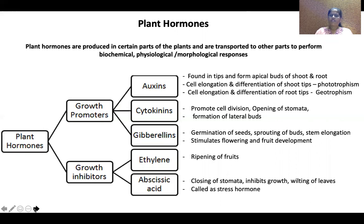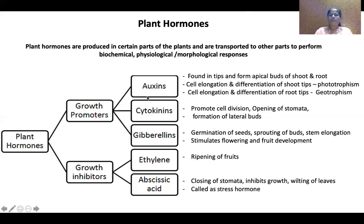Biochemical responses include photosynthesis and respiration. Physiological responses include growth. Morphological responses include seed setting and fruit development — these are the changes in the plant that hormones bring about. There are two types of plant hormones: growth promoters and growth inhibitors. Out of five plant hormones, three — auxins, cytokinins, and gibberellins — are growth promoters. Ethylene and abscisic acid are growth inhibitors.